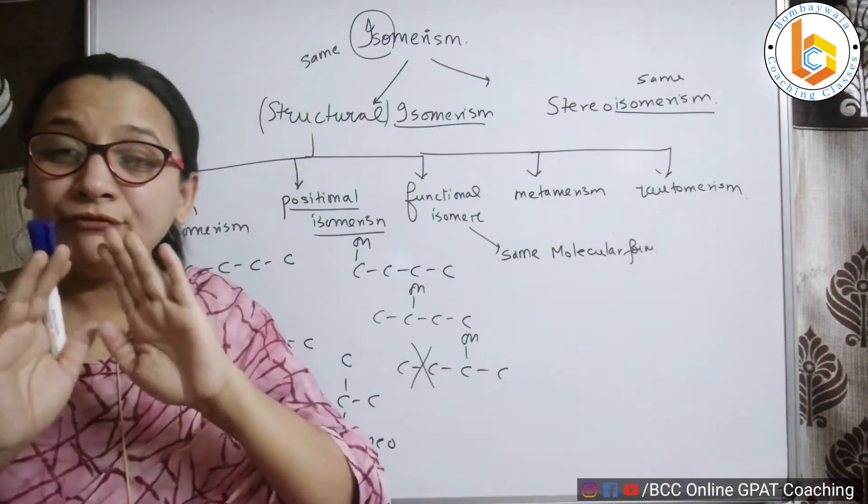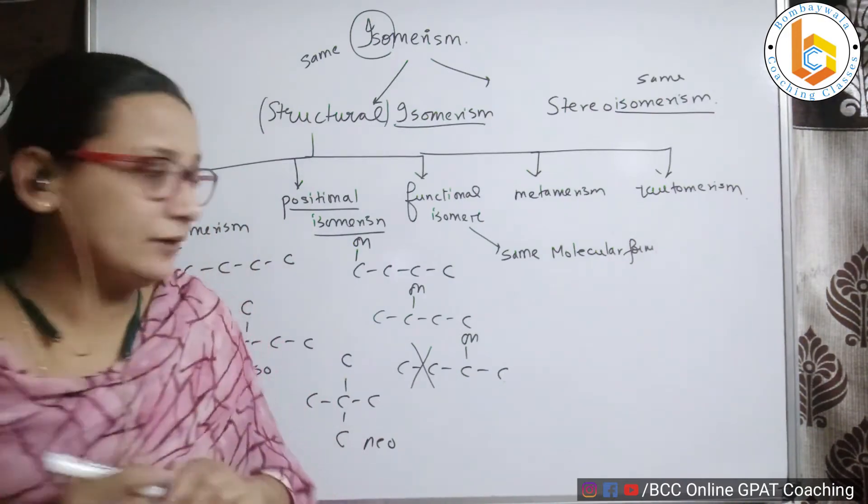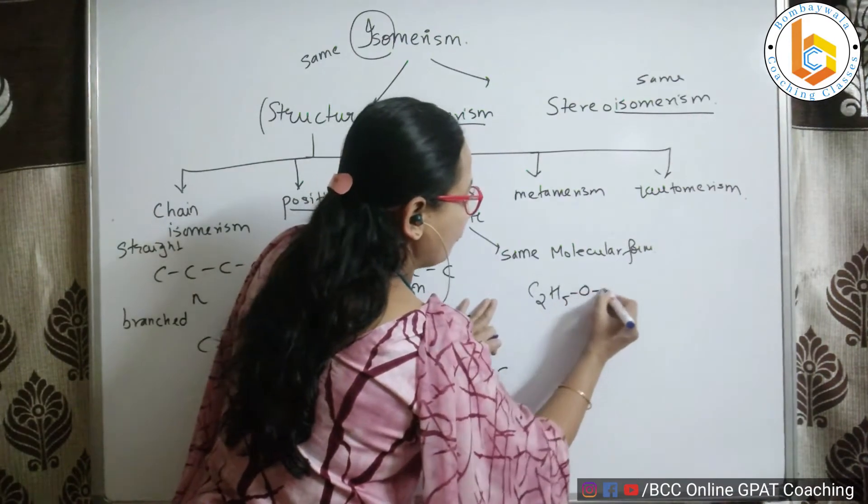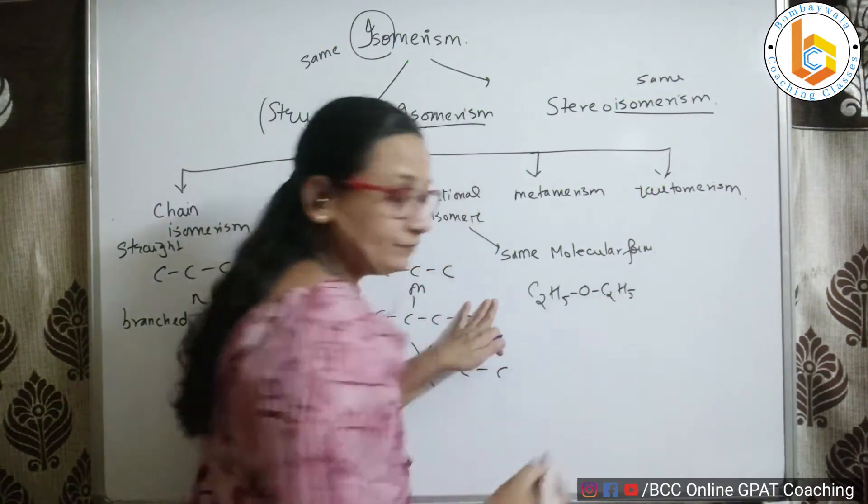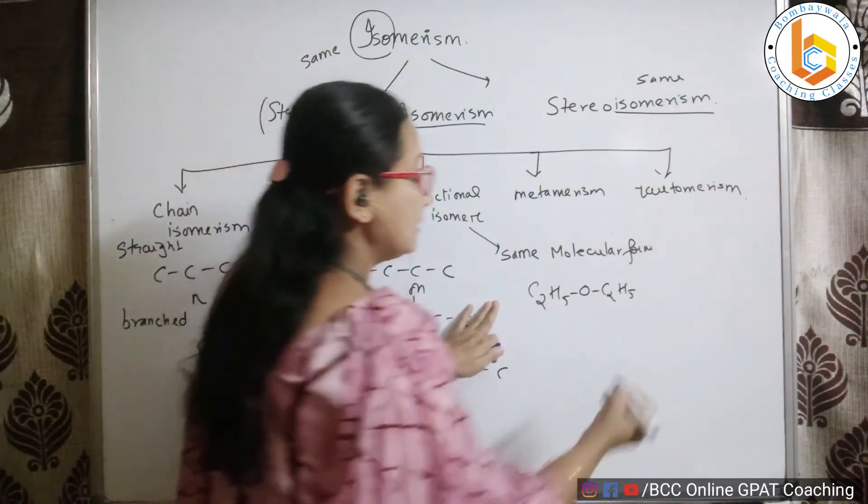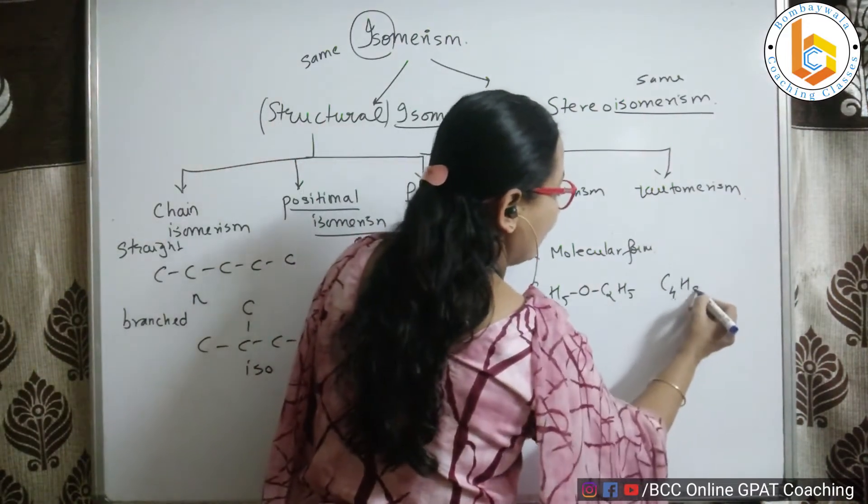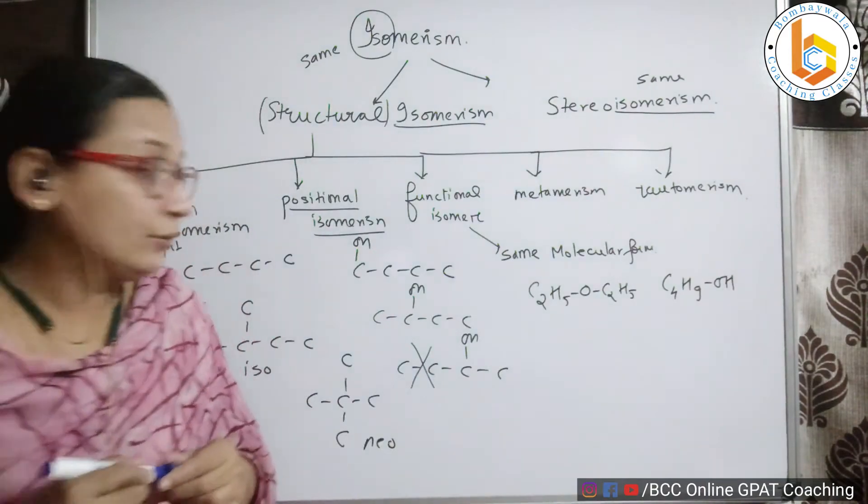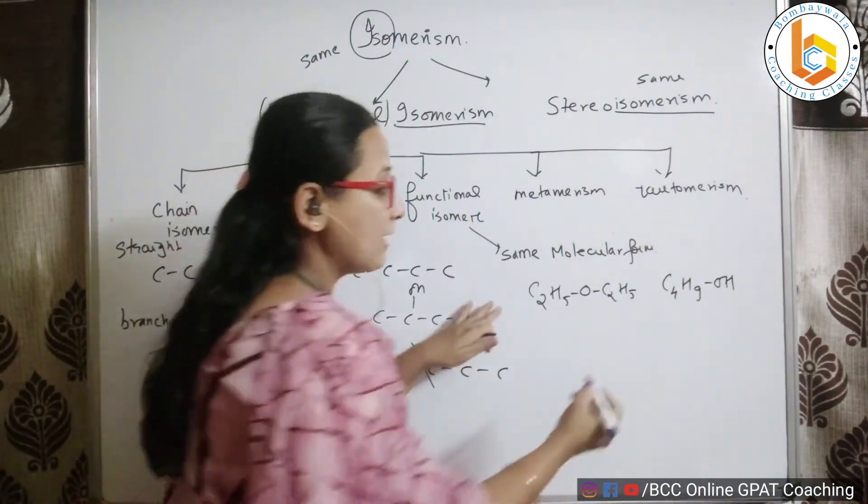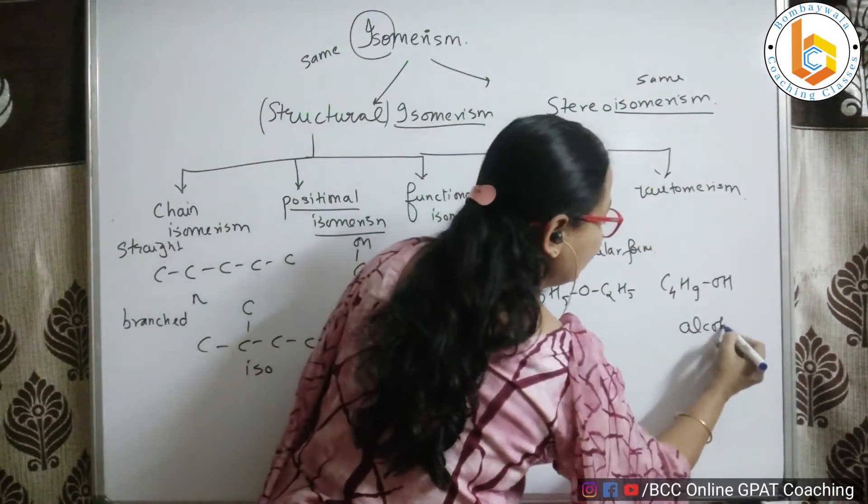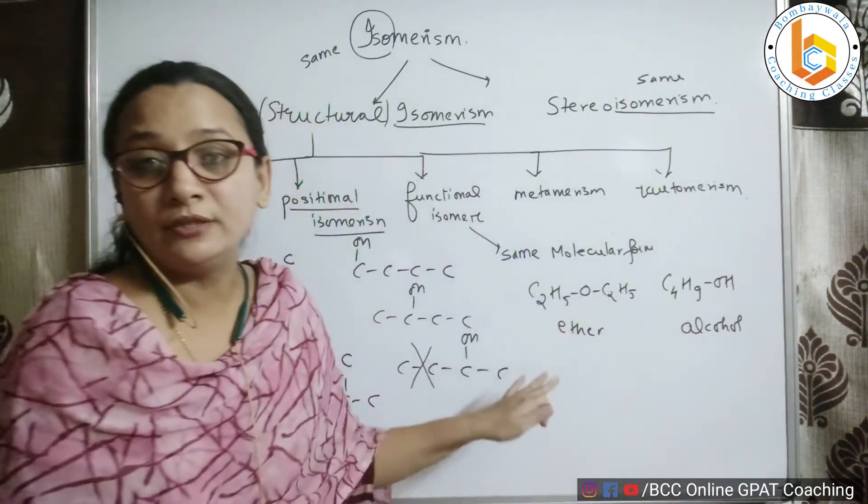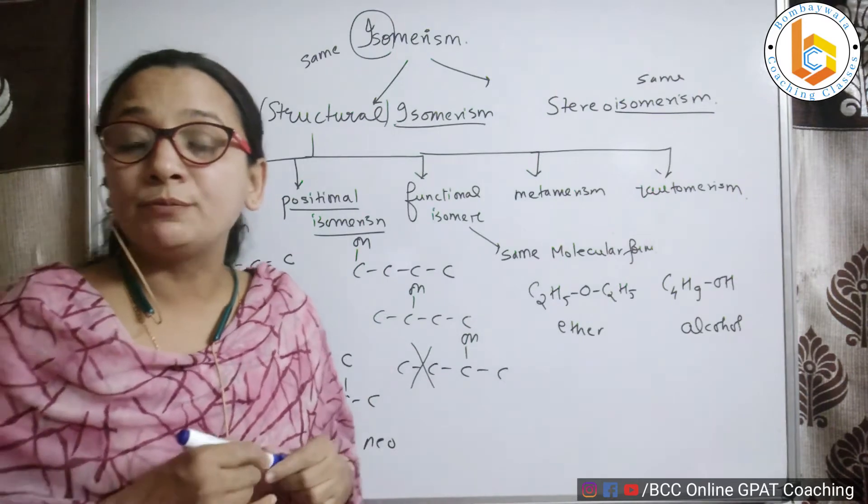They have different functional groups. For example, if I write something like this: C2H5-O-C2H5, and if I write something like this: C4H9-OH. Have a look at both of them. This is an example of an alcohol. This is an example of an ether. We know that ether is a derivative of alcohol, ether is prepared from alcohol.